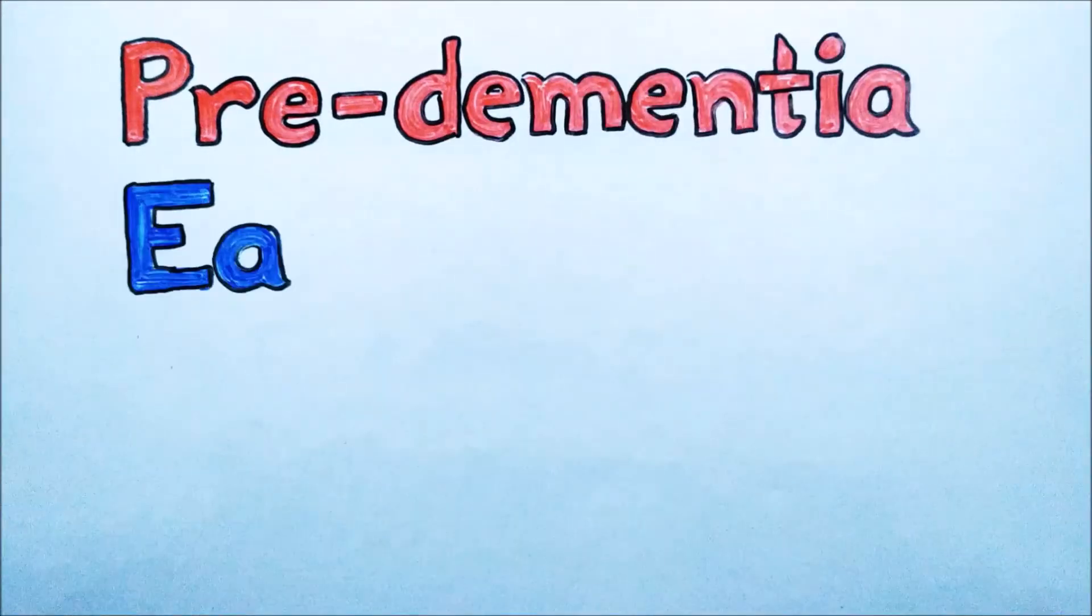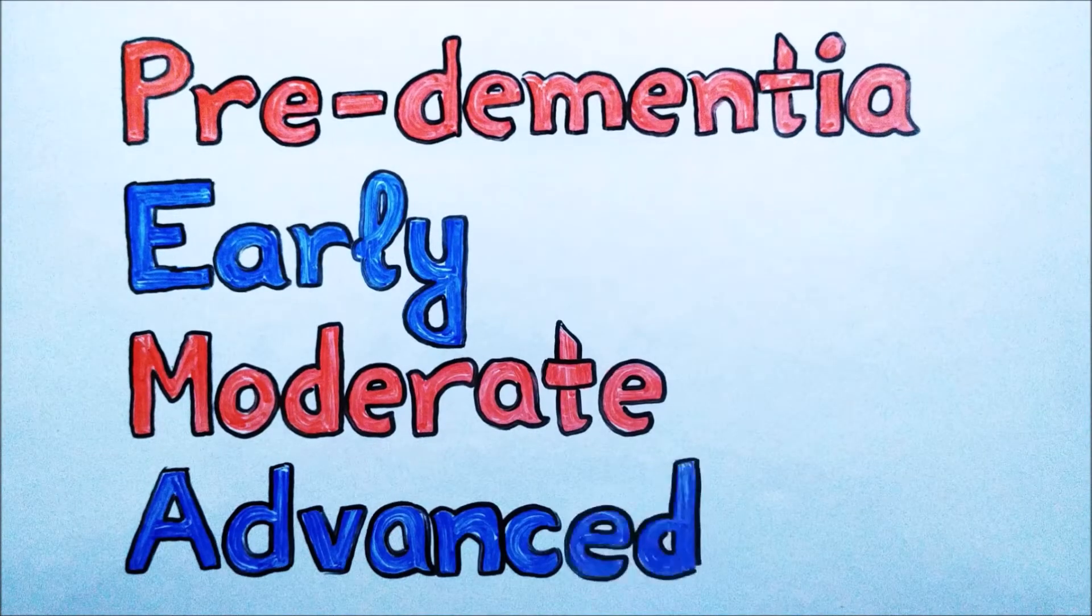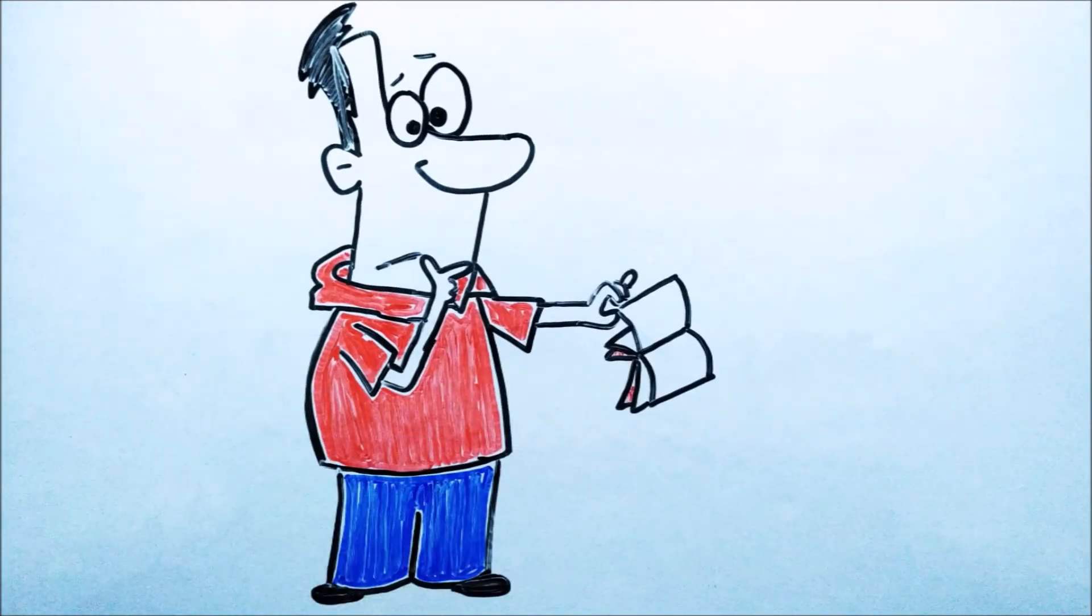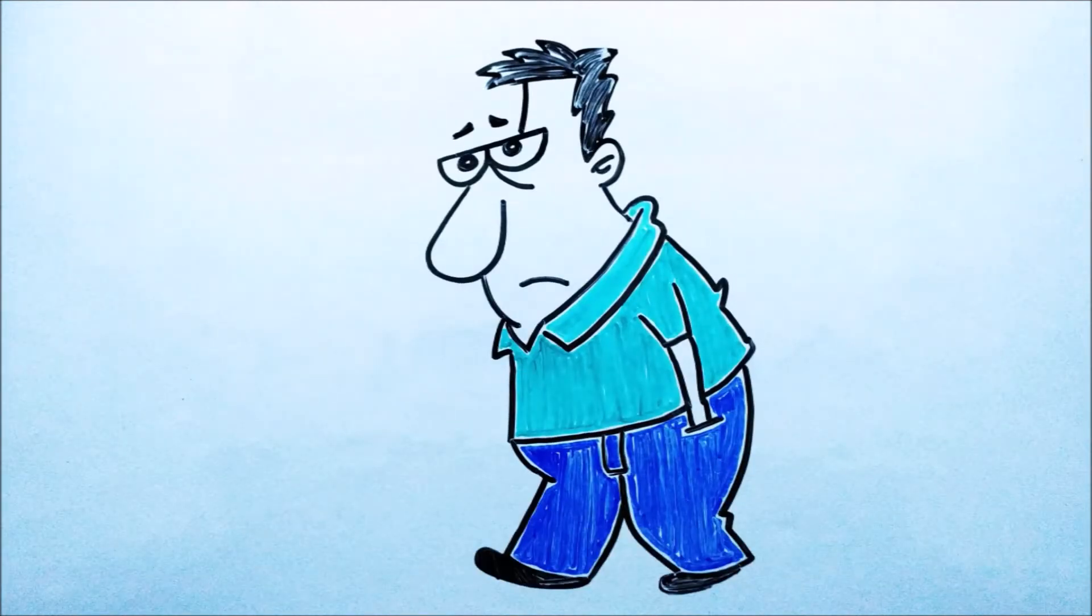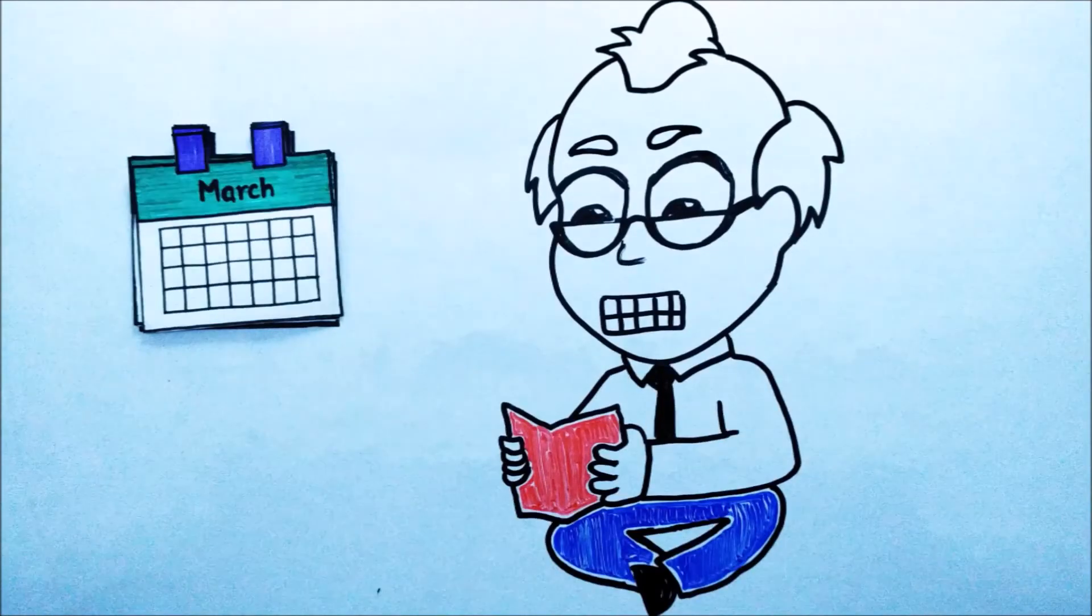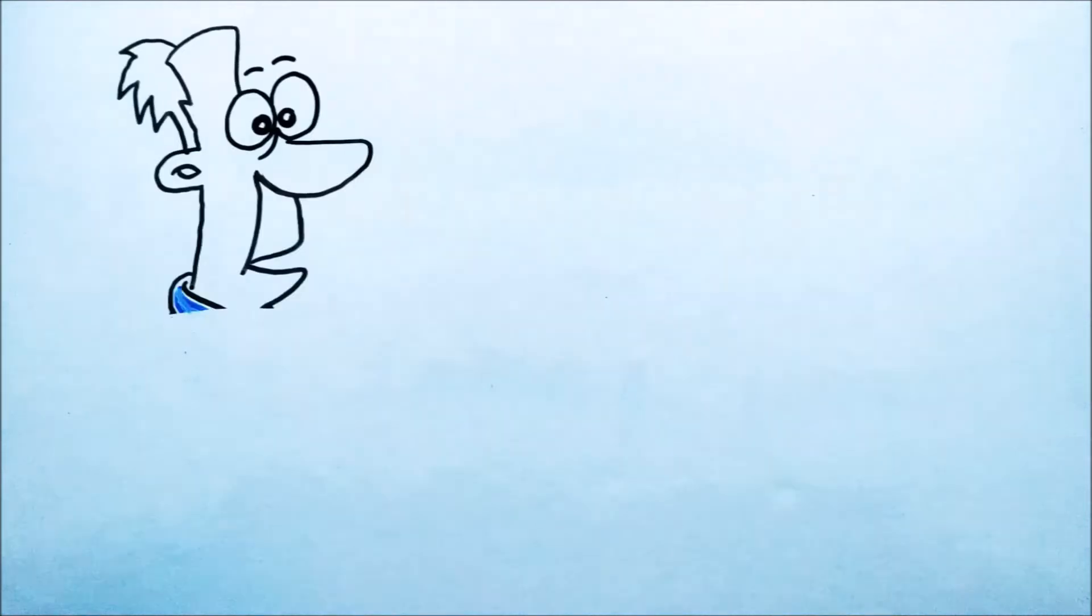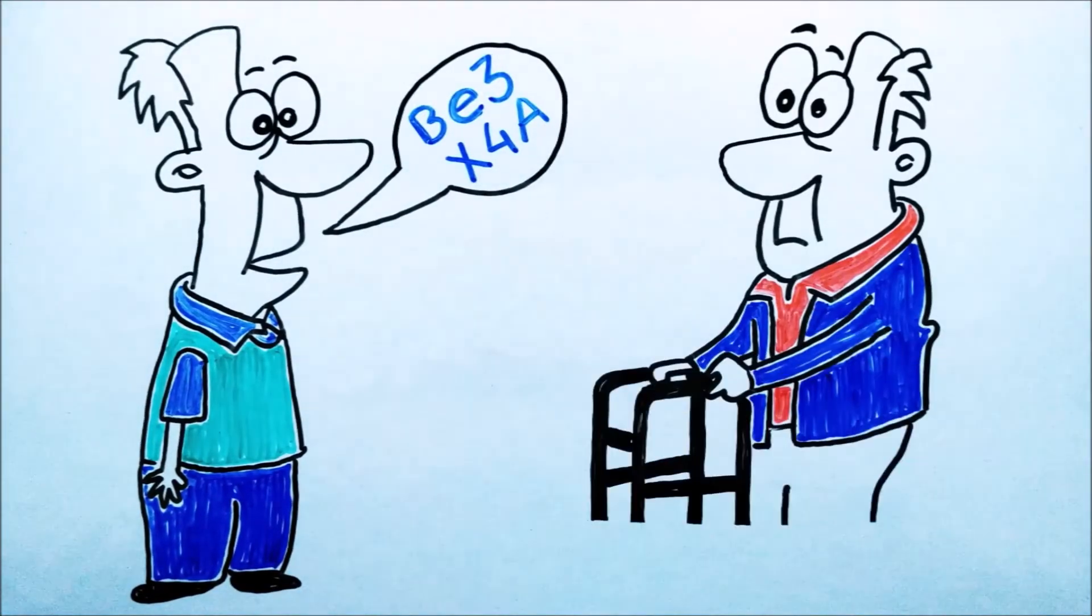The symptoms of Alzheimer are categorized into four stages: pre-dementia, early, moderate and advanced. In pre-dementia stage, the person shows difficulty in learning and planning. Some depressive symptoms also appear in this stage. As the time passes, the difficulty in learning increases and the person reaches the early stage. In the early stage, some people also show problems with language and executive functions.